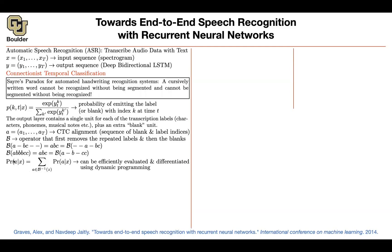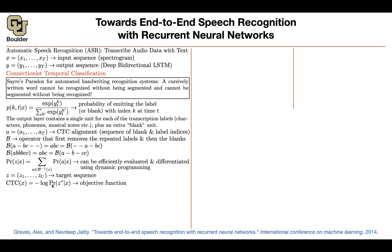For that particular label, you are interested in the probability of that label given the speech. You're going to consider all of the possible paths that take you to that particular label — so B(a) is in B-inverse of z. You're looking at all the paths that give you the same label to write down your likelihood. Then you have your target sentence to optimize the parameters of your neural network, giving you a loss function. You know the ground truth, you know your input, and you know an efficient way of computing this probability using dynamic programming.